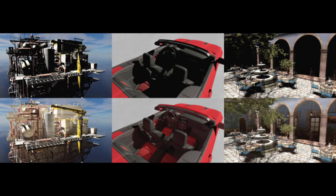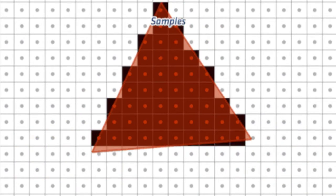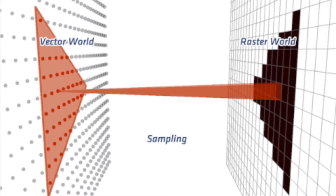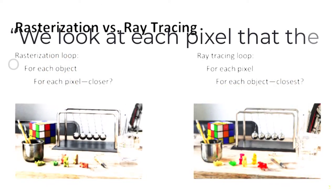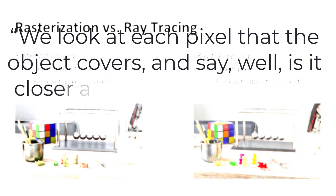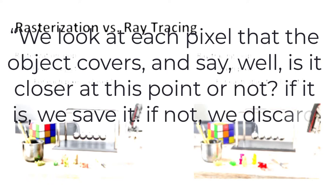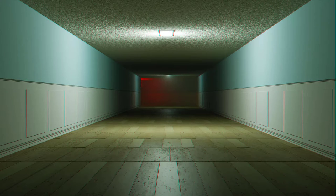Throughout 3D rendering history there have been many methods to achieve real-time lighting, the most popular one being rasterization. The difference between rasterization and ray tracing is pretty simple. In rasterization, we take a grid and throw objects at that grid of pixels. For each object, we look at each pixel it covers and ask whether that object is closer at that point — if it is, we save it; if not, we discard it. Still, making something look good with rasterization is graphically demanding.